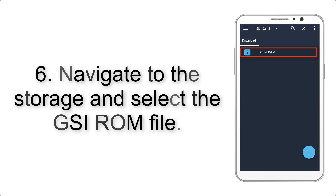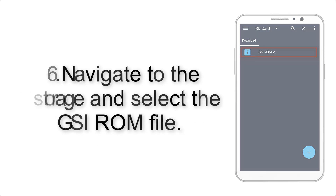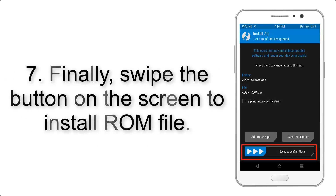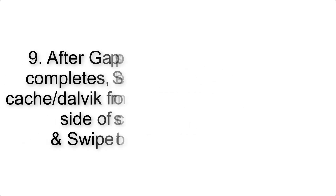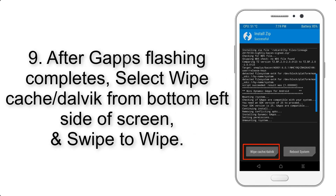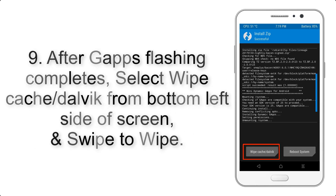Step 6: Navigate to the storage and select the GSI ROM file. Step 7: Swipe the button on the screen to install the ROM file. Step 9: After GApps flashing completes, select Wipe Cache and Dalvik from the bottom left side of the screen.